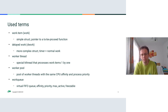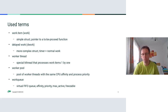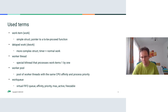Finally, there is the workqueue itself, which I would describe as a virtual queue where you can specify parameters that affect how items are processed. There is also an internal structure called pool_workqueue (pwq) which connects a workqueue to worker pools. Work is not necessarily processed in strict order — some later-queued work might be processed earlier, and you'll see why shortly.